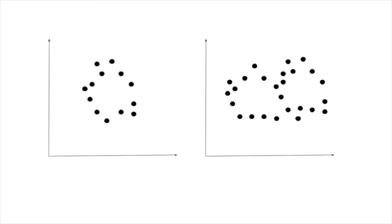Now, the basic intuition behind TDA is understanding the shape of data. We understand shape by connecting the data points — connecting them like dots — and then counting the number of holes in that connected structure. For example, look at these two scatter plots. On the left, if we connect all the dots that are roughly close together, we have one really big hole in the middle. If we do the same on the right, we have two big holes.